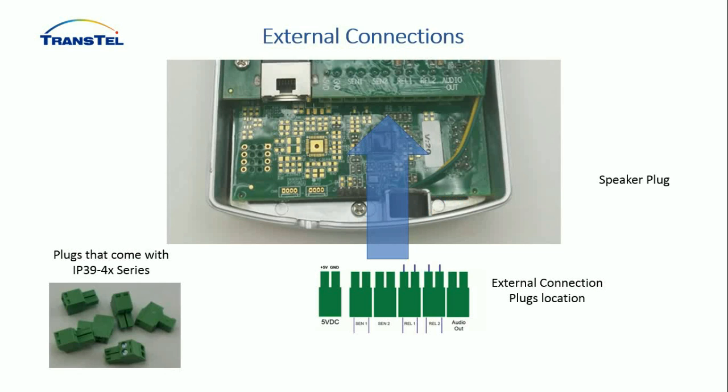Let's talk about the external connections. At the back of the phone you have the plugs that come with the TransTel IP39 phone. They plug straight into the back of the phone. You have your 5V DC input if not using PoE, Sensor 1, Sensor 2, Relay 1, Relay 2, and an audio out plug.